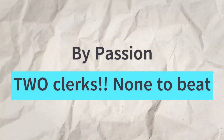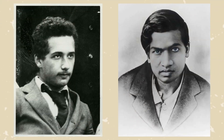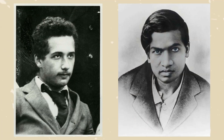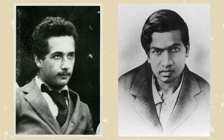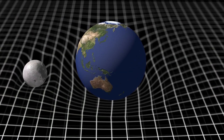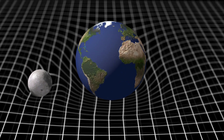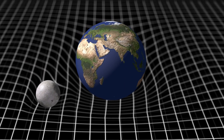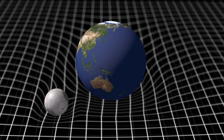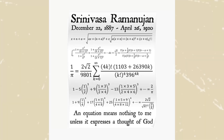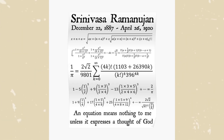Now let's talk about passion. Two incredible examples are Albert Einstein and Srinivasa Ramanujan. Both started their careers as clerks — Einstein at the Swiss Patent Office and Ramanujan at the Port Trust Office in India. Despite having very little formal support or resources, both made extraordinary contributions to science. Einstein's remarkable theories of relativity revolutionized our understanding of space and time. Interestingly, once he joined the university, his contributions slowed down. Ramanujan's work was largely done outside the academic establishment; unfortunately, he passed away young, but his impact on mathematics remains profound.